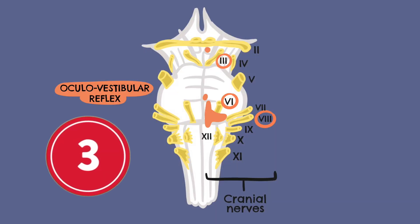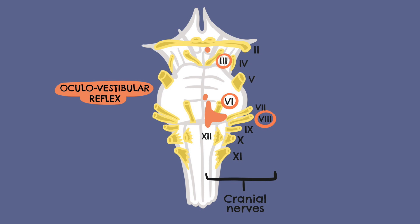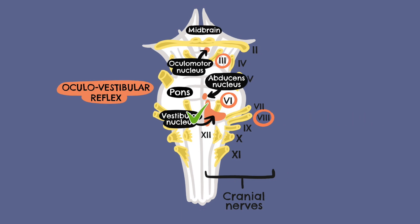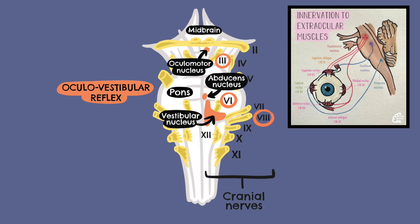The oculovestibular reflex involves testing for nystagmus or ocular deviation after instilling ice-cold saline into the auditory canal. Both sides are tested separately. In brainstem death, the response would be the absence of eye movement towards the side of saline infiltration. The afferent nerve is the vestibulocochlear nerve. The brainstem nuclei involved are the vestibular and abducent nuclei in the pons, and the oculomotor nucleus in the midbrain. The efferent nerves are the oculomotor and abducent nerves to the medial and lateral rectus muscles of the eye.